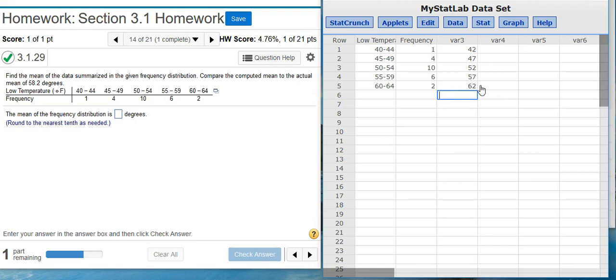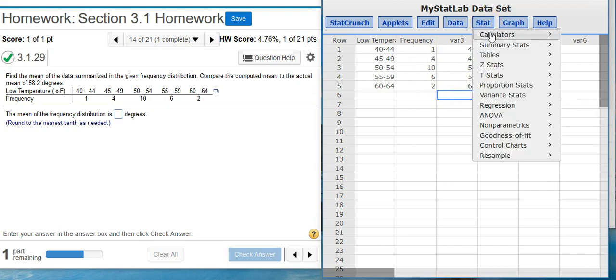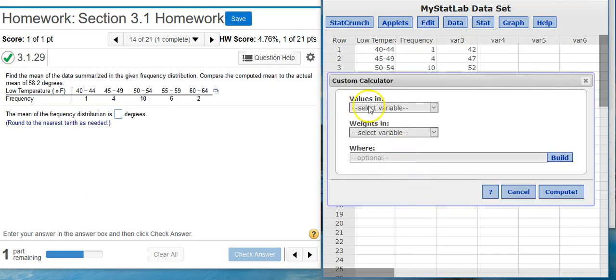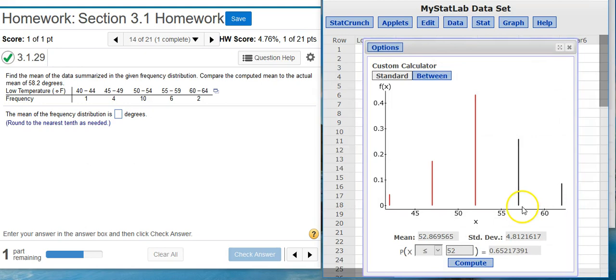StatCrunch makes this super easy. You don't have to use that obnoxious formula that's in your textbook. So now that we've got the midpoints and we've got the frequency counts, let's go up to Stat. I'm going to click on Calculators, and then go down here to the bottom, which says Custom. Values are going to be the midpoints that we just calculated. So I'm going to select that column. Weights are the frequency counts. So I select that column. Then I just hit Compute. And voila!